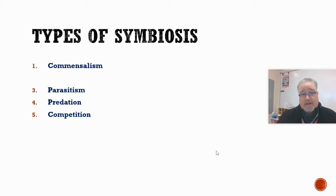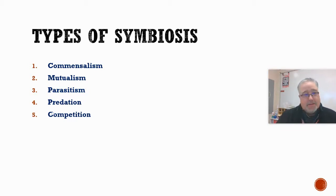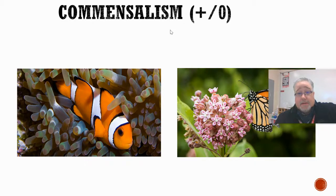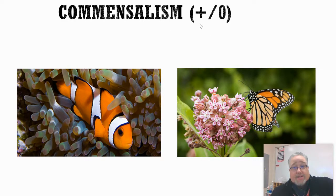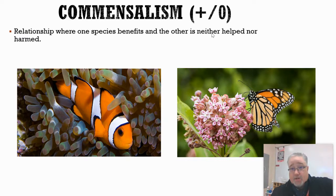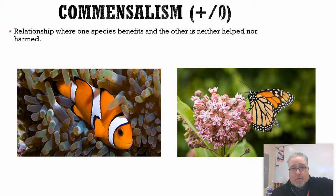When it comes to symbiosis, there are five different types we're going to explore. Today we'll talk strictly about the first three — commensalism, mutualism, and parasitism — and a little bit later this week we'll cover the other two. Commensalism is what we call a plus-zero relationship, meaning one organism benefits while the other is neither helped nor harmed. So we call it a plus-zero or plus-neutral relationship.